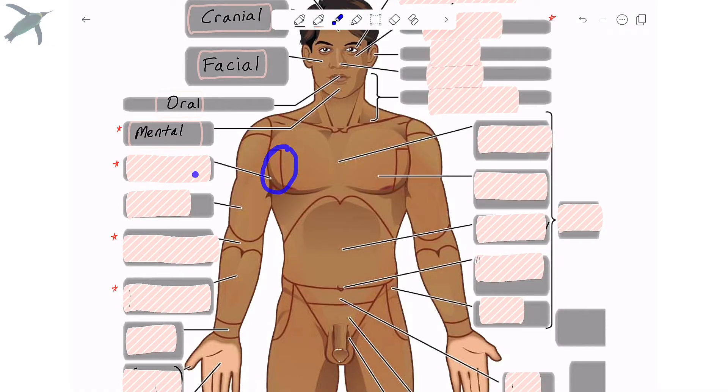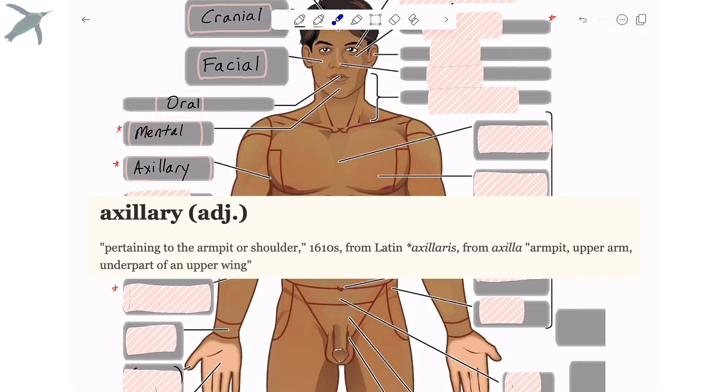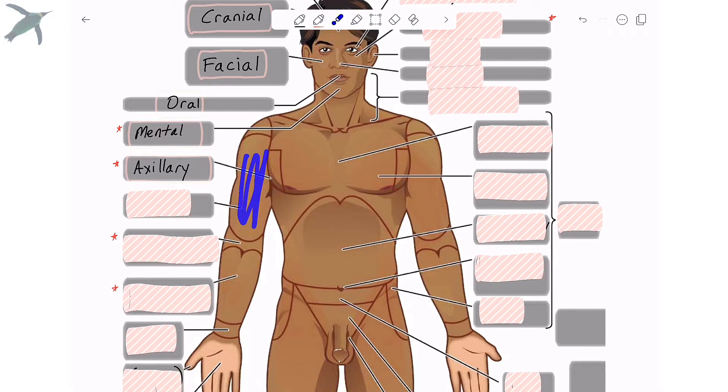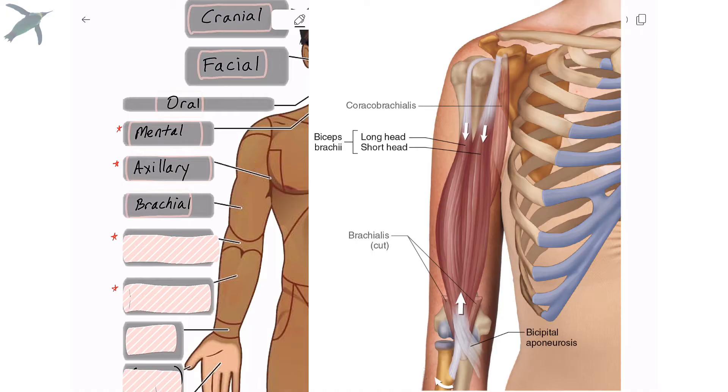The correct term for the armpit region is axillary. So axillary is Latin. It probably derives from ala, meaning wing. This region, a lot of people know, is the brachial region. Most people know biceps brachii, a major muscle here. Brachial just means arm.